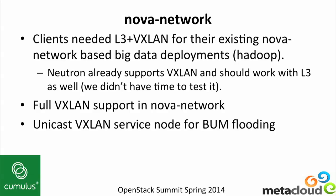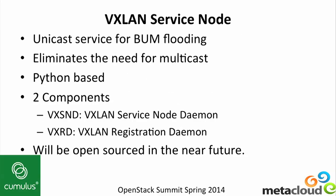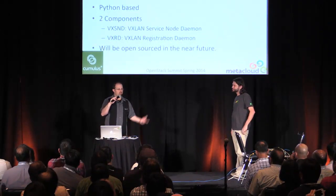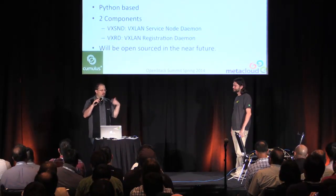We've also, at MetaCloud, created a unicast VXLAN service for doing all the BUM flooding for you, so you won't need to use multicast. That VXLAN service node is a unicast service node for BUM flooding. It's a pure Python-based solution today with two components: the VXLAN service node daemon, which actually does the replication and flooding, and a VXLAN registration daemon that you run on all your VTEP endpoints to keep the service node aware that the endpoints are there. We're planning to open source this in the very near future.